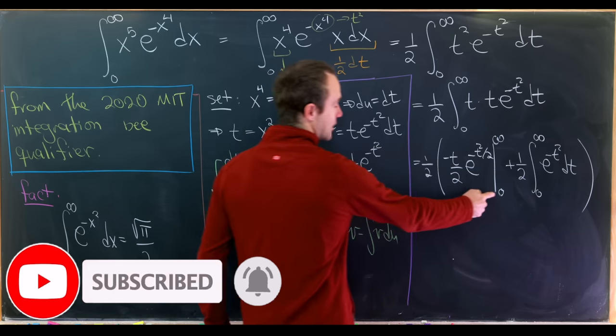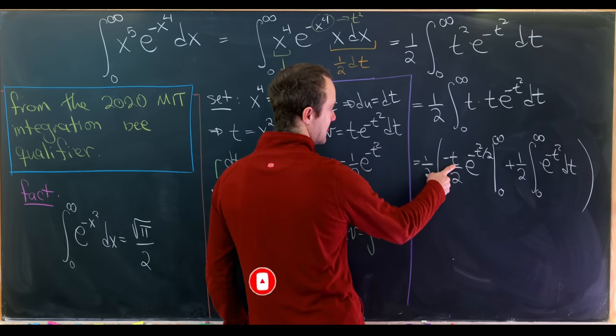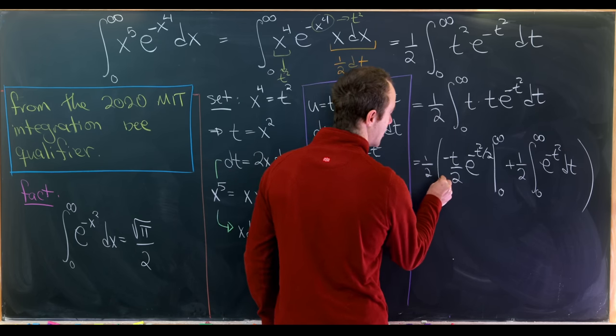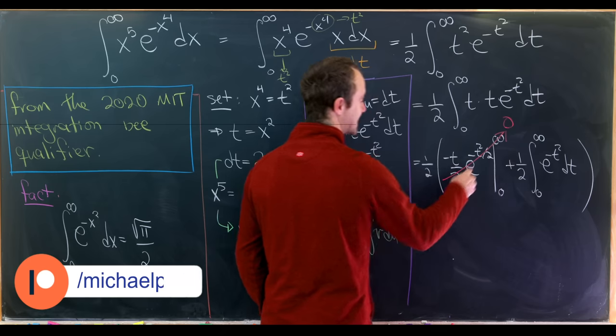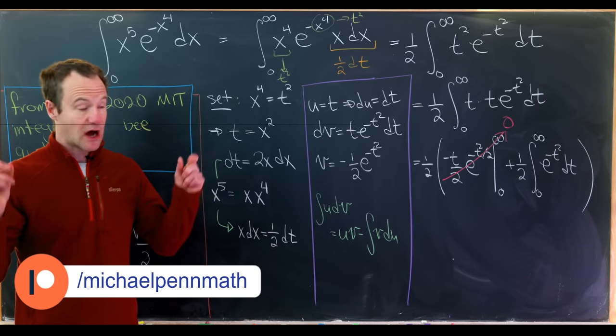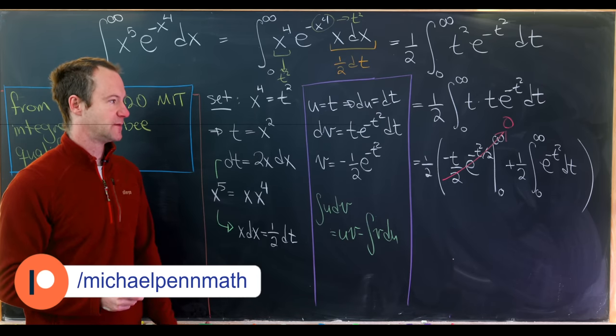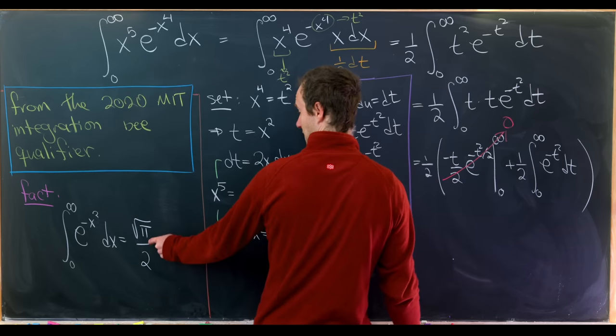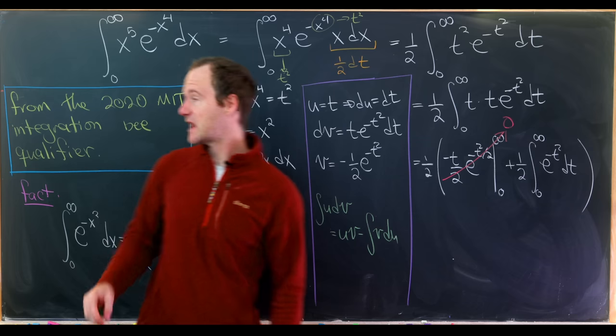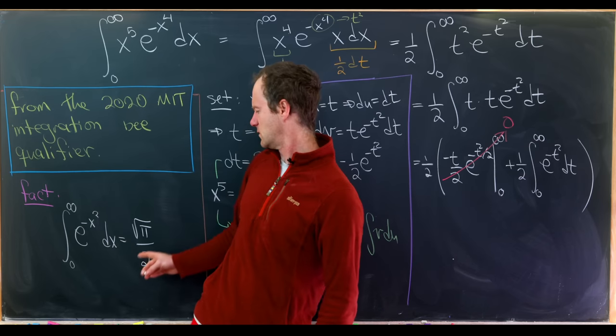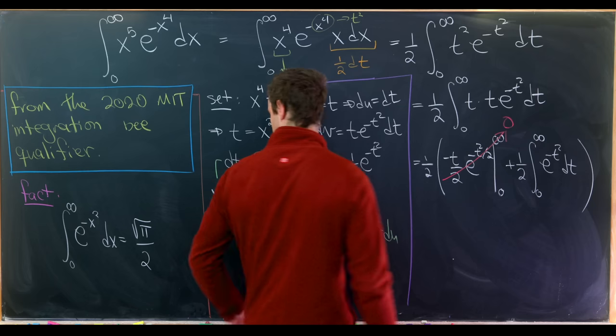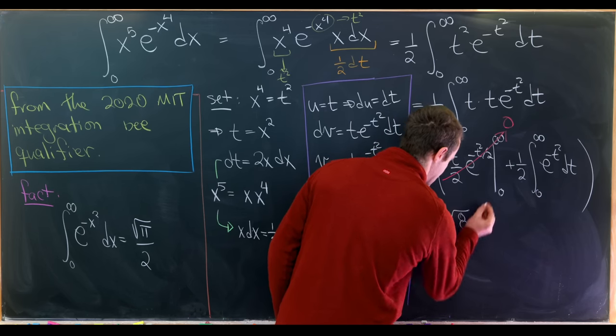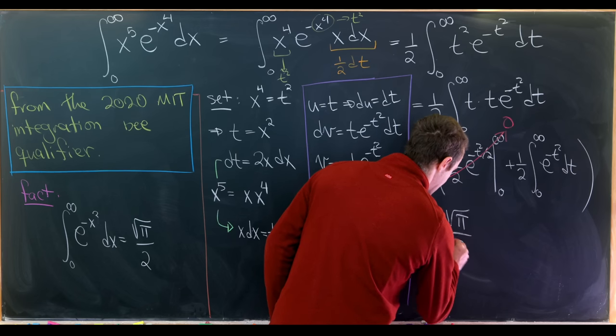Now we'll evaluate this at zero. Notice that we get zero. We let t tend towards infinity, and we'll see that we also get zero. That's because this exponential decay term will dominate the polynomial t term. That means we're left with one half times one half times this fact over here, which in the setting of this integration B qualifier, we don't really have to show that. So we have one half times one half times the square root of pi over two, in other words, the square root of pi over eight.